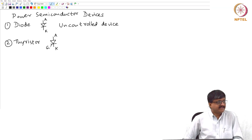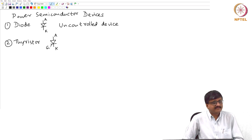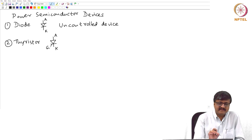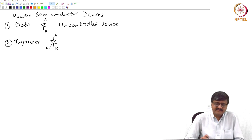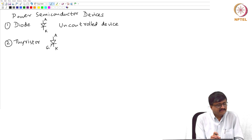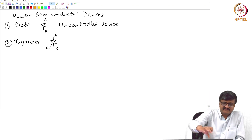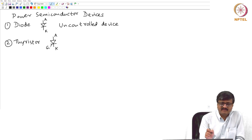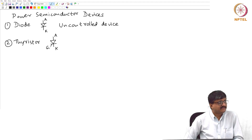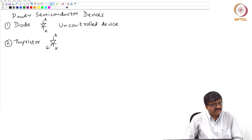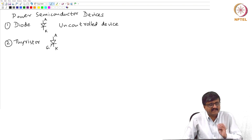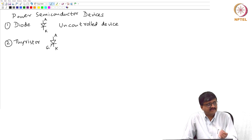In the case of a thyristor, if it is forward biased — the definition of forward biased is similar to that of the diode: if the potential of anode is greater than the potential of cathode — then if a gate current pulse is given, that means if a positive current flows from gate to cathode, just a pulse of positive current, then it starts conducting and we say it is in the on state. I can turn it on as long as the thyristor is forward biased by giving a signal using the gate terminal.